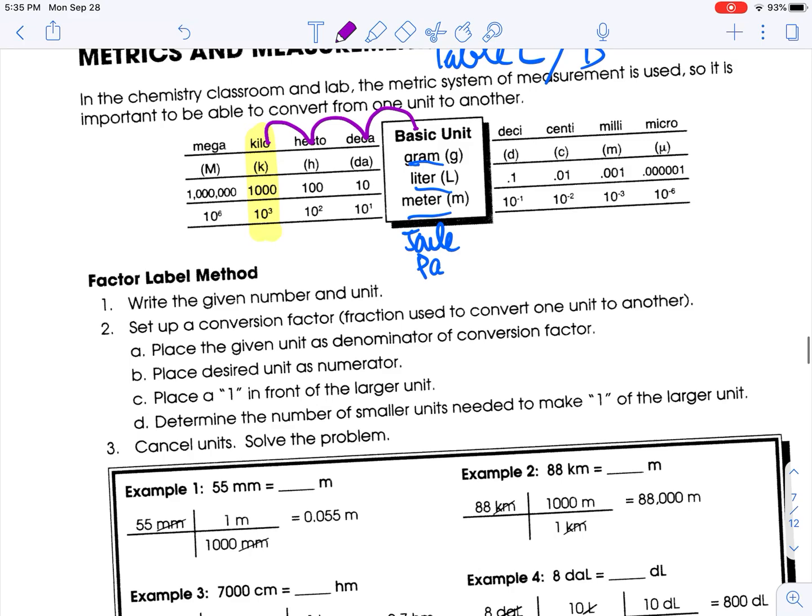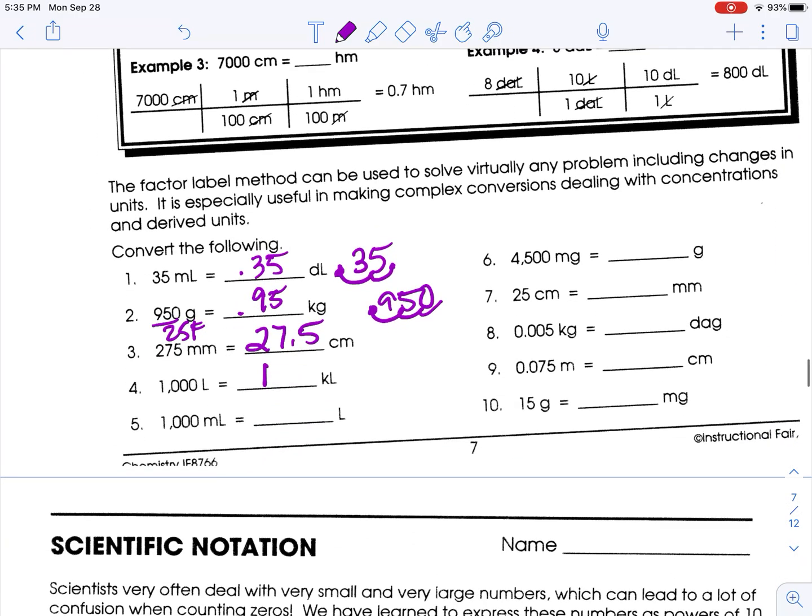Now we have milliliters to liters. Milli is here. One, two, three spots to the left. So that's going to be one liter.